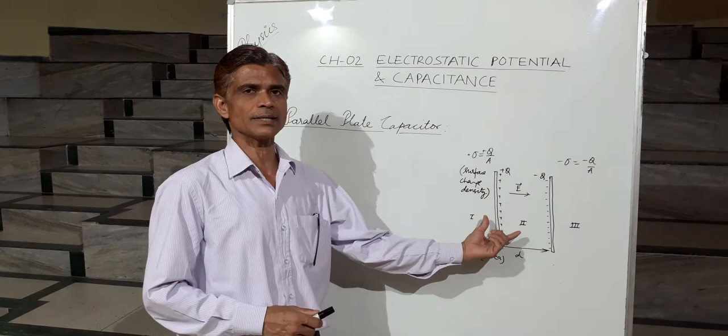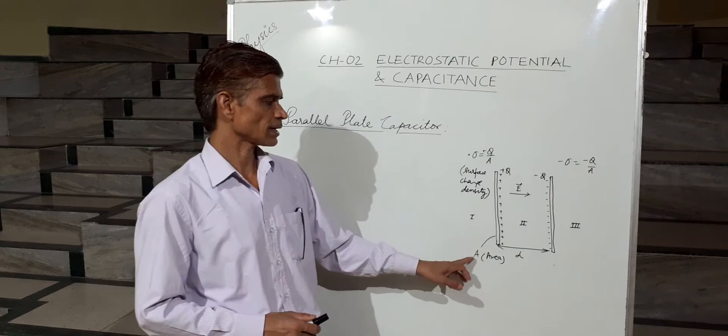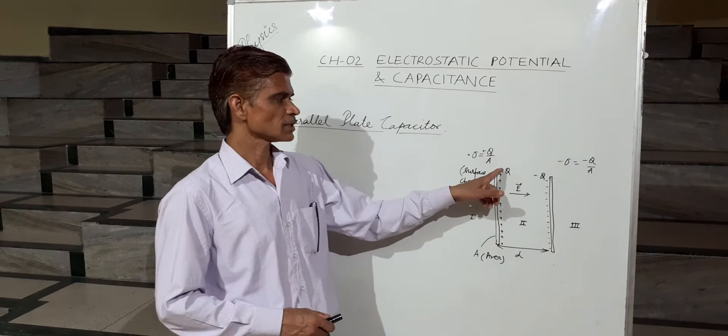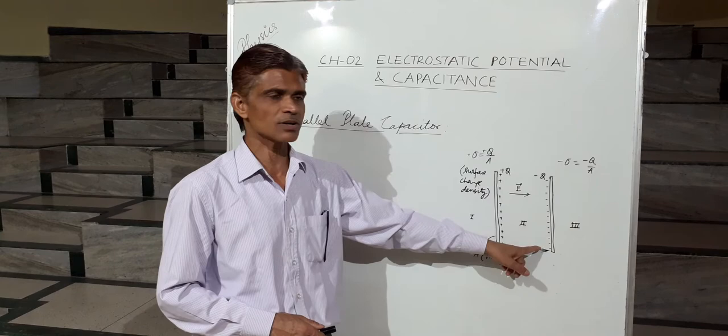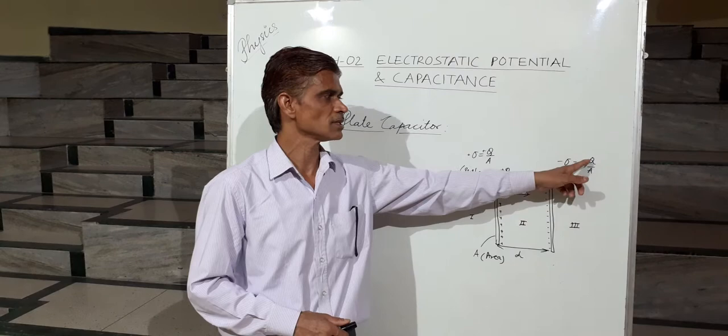A parallel plate capacitor consists of two plates parallel to each other, separated by a small distance d. The two parallel plates have area A and separation d. One plate carries charge +Q with surface charge density +σ = +Q/A, and the other plate carries charge -Q with surface charge density -σ = -Q/A.